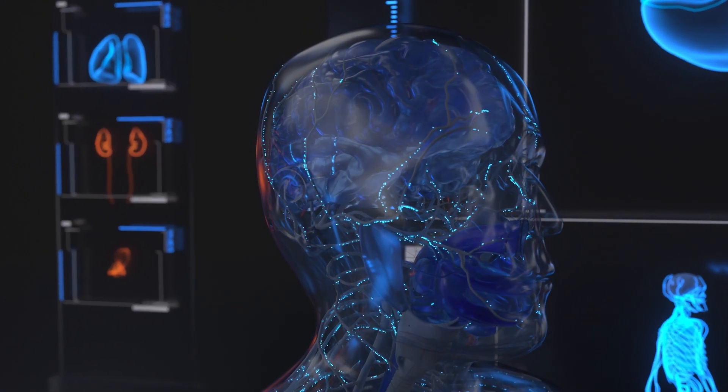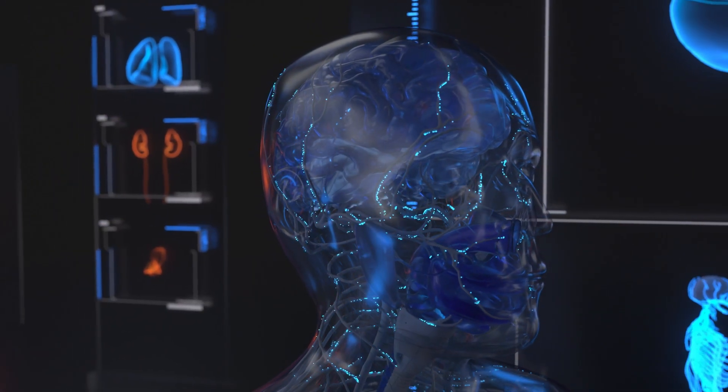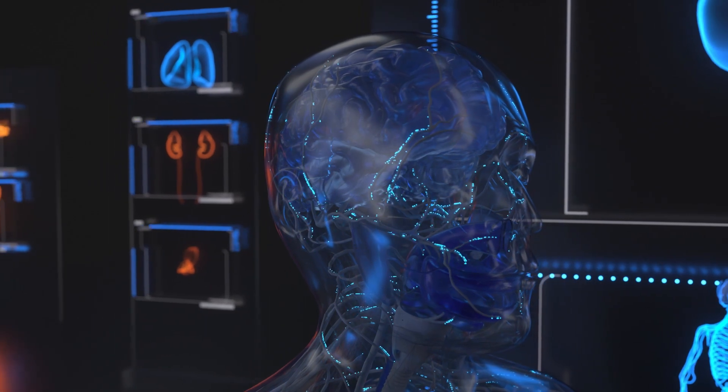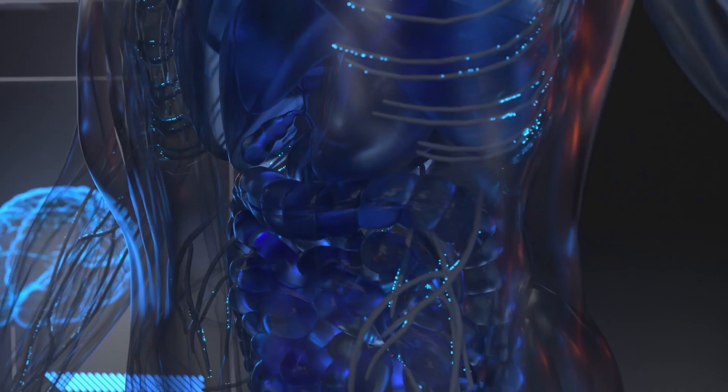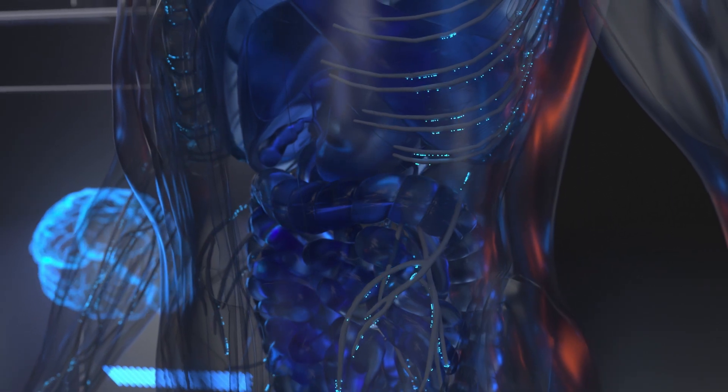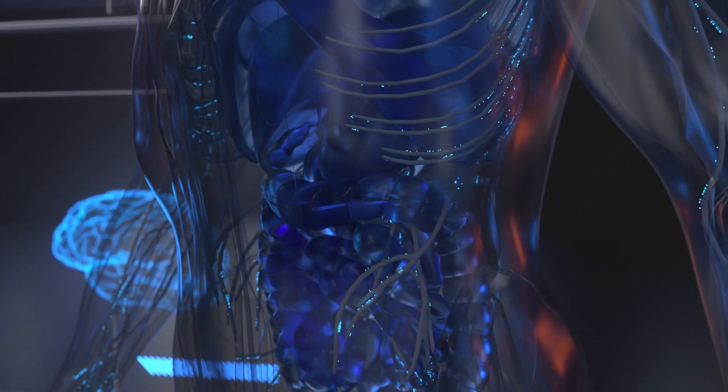The immune system is constantly surveying the body for signs of disease. When the immune system is functioning at its best, it can initiate a reparatory response by enlisting specialized cells that work to restore optimal performance.